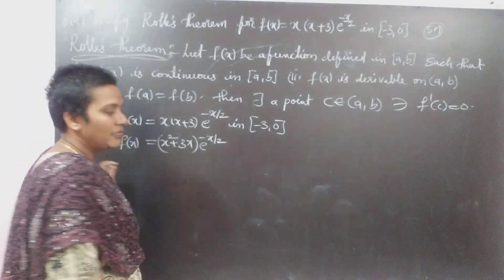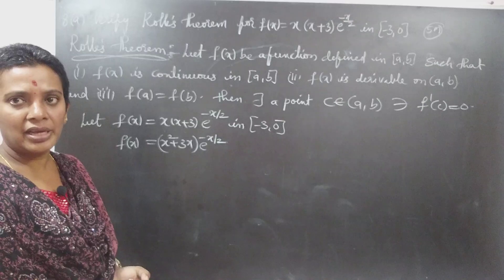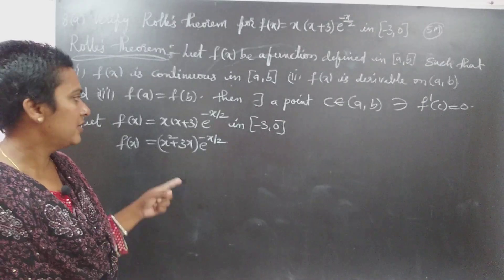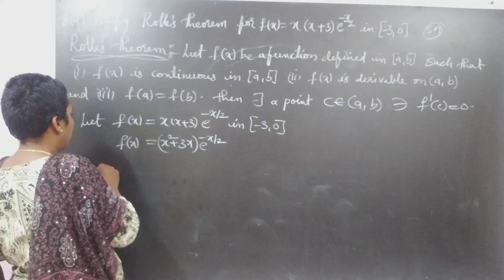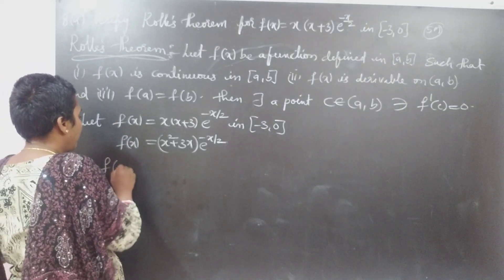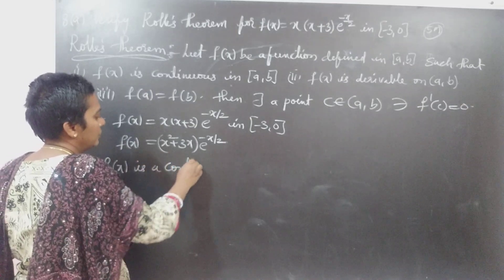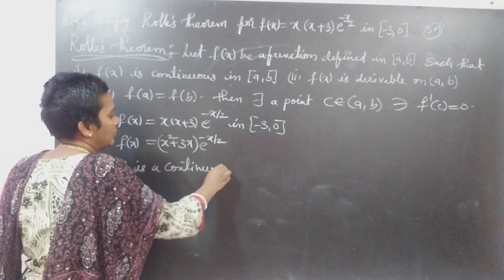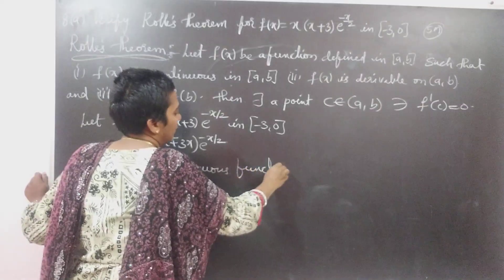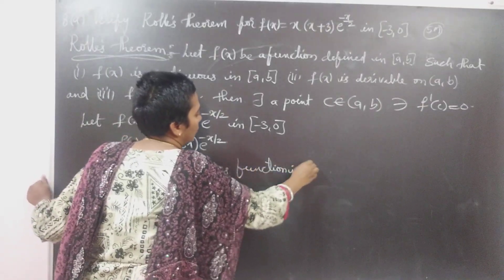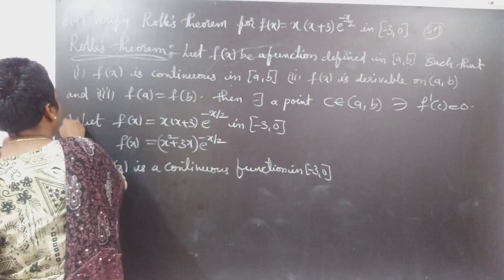This function is a combination of polynomial and exponential. We know that the exponential is a continuous function in any interval and the polynomial is also a continuous function. Therefore, F(X) is clearly a continuous function in closed interval [-3, 0]. The first condition is satisfied.